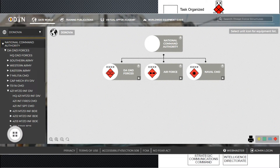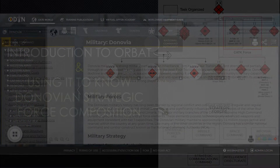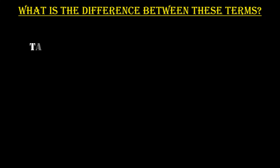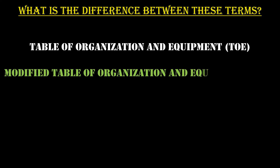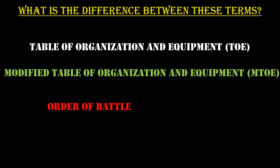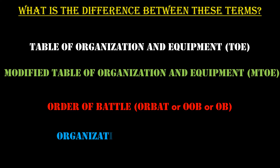To start, we will need to define the difference between four terms: Table of Organization and Equipment (TOE), Modified Table of Organization and Equipment (MTOE), Order of Battle — called ORBAT, OOB, or OB — and Organizational Chart, or Org Chart.